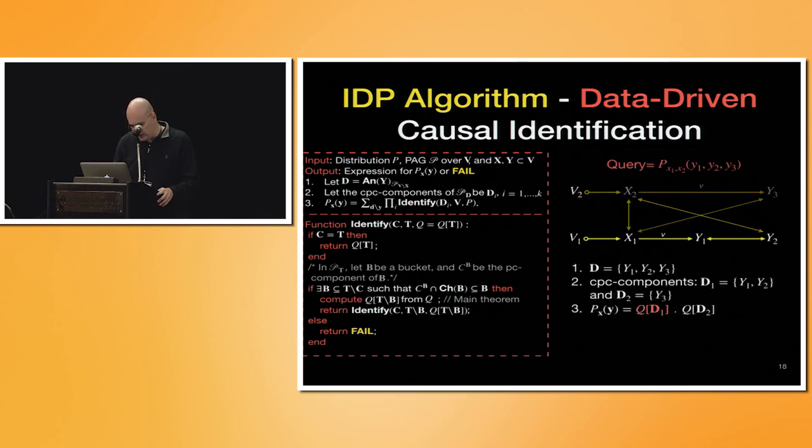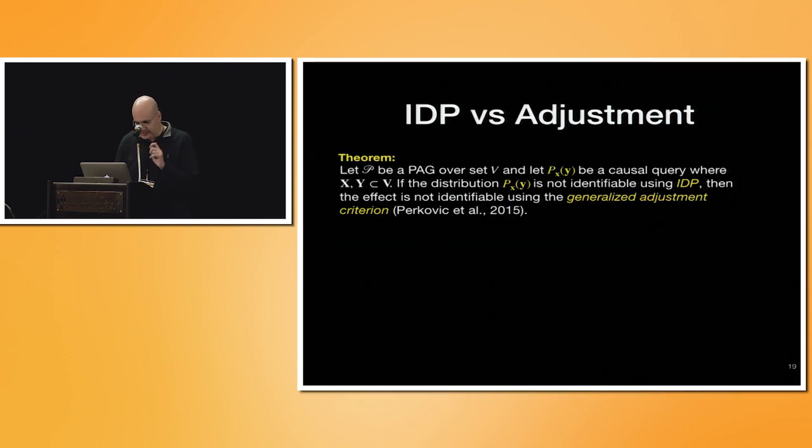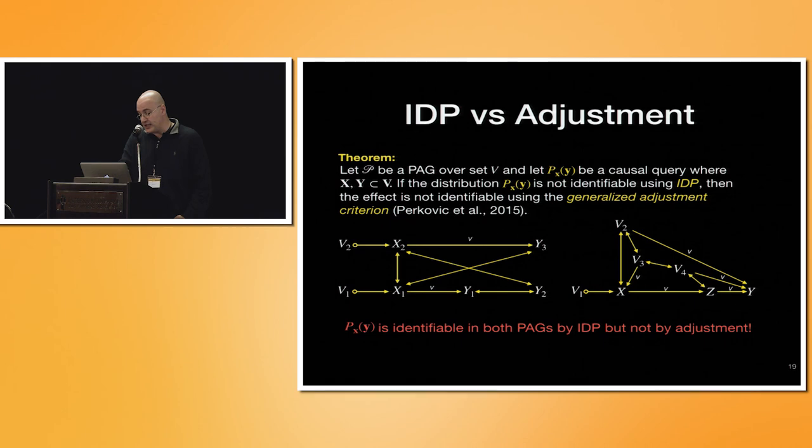Natural questions like how this compares with something else. What's this crazy dude is saying? There is an algorithm or identification strategy in PAG that is by adjustment. It turns out that those are two graphs that the adjustment criterion that by Perkovic in 15. I don't think it's a UAI paper, but there is another in UAI. People do not get confused. But these two graphs, they are not identifiable by adjustment. That is her method, but is identifiable by IDP. That is the algorithm that I just told you. And it turns out that all adjustment expressions or expressions that Perkovic can get in her method, IDP can get. Then this shows that IDP is strictly more powerful than adjustment in PAGs.